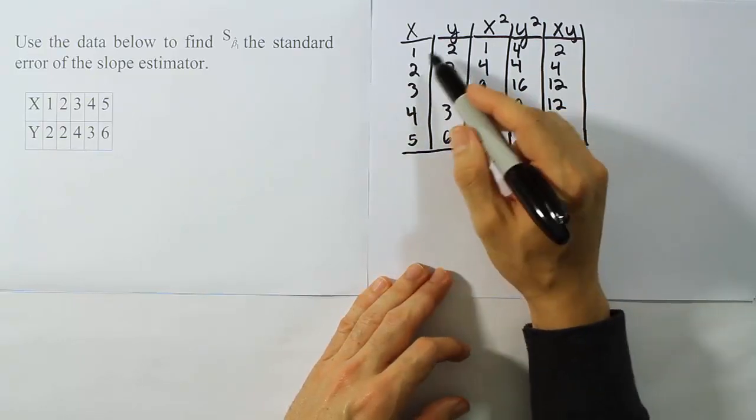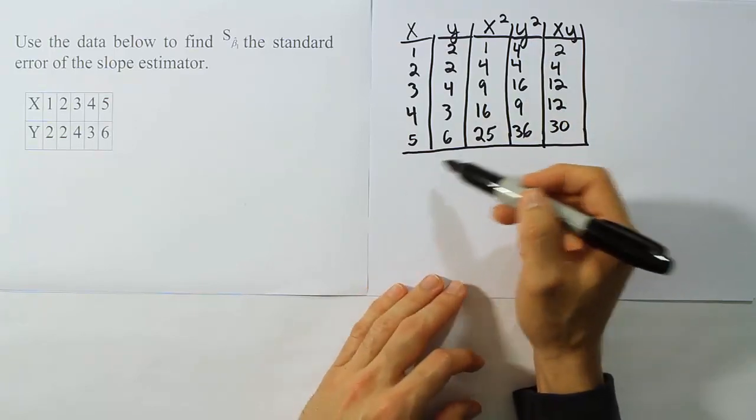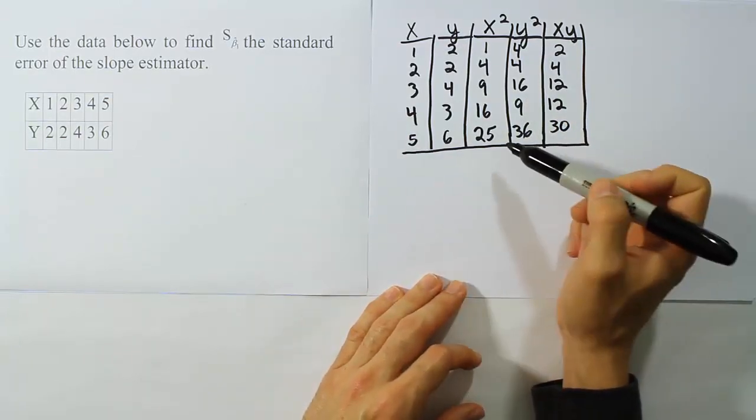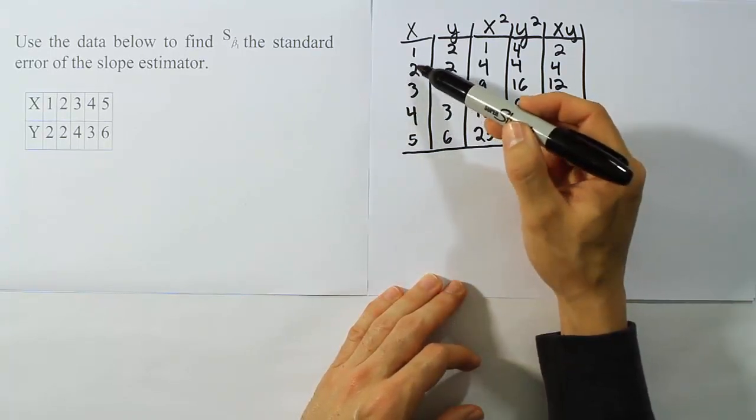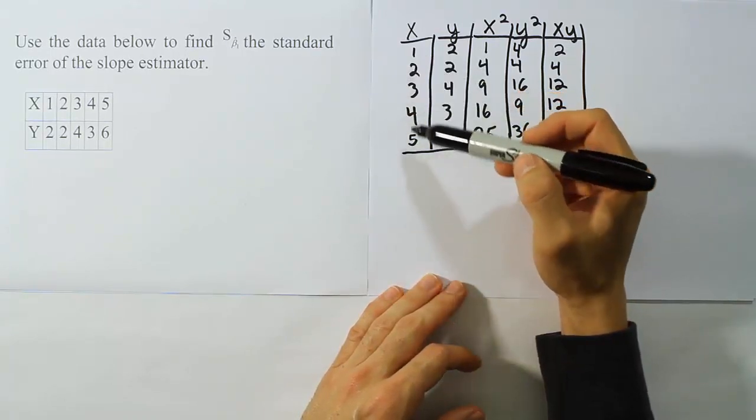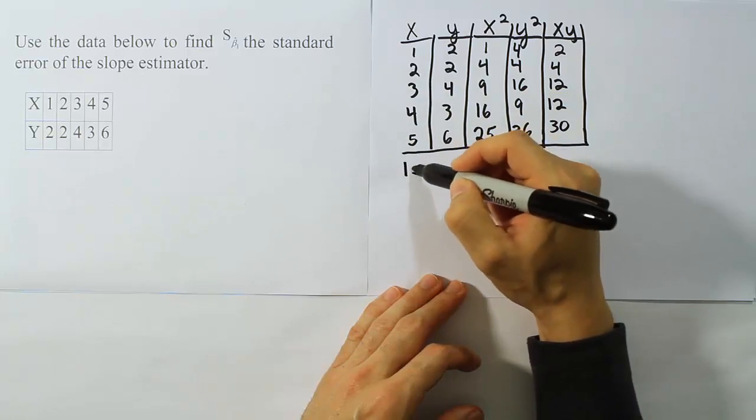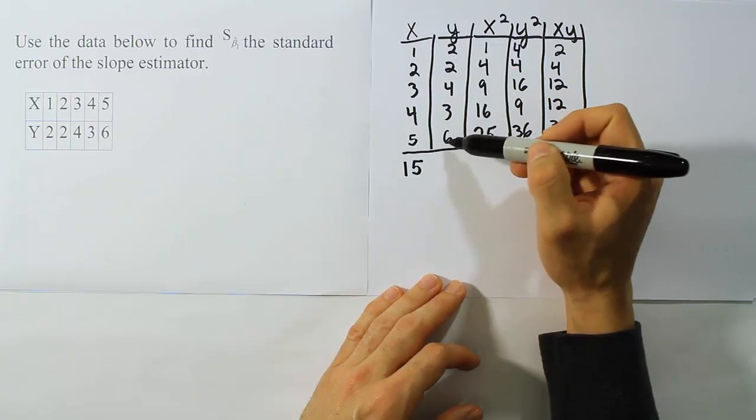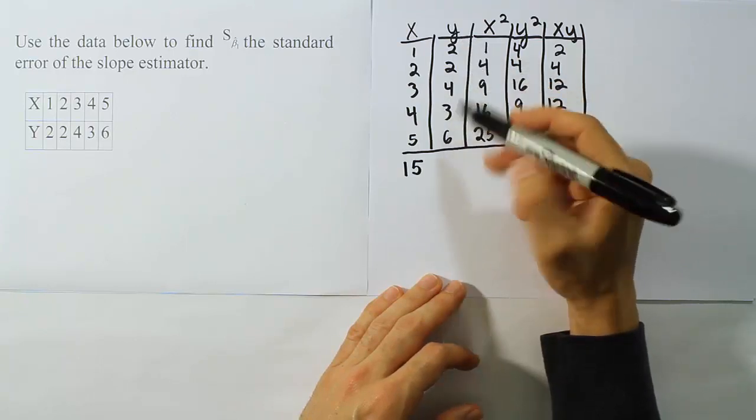That didn't take too long, luckily, because we have some simple integers to work with. Now the next step is to do the arithmetic to add up all these columns. So we have to add up all the data. So let's do that together. So it looks like we have 15 here. We have 5, and 5 is 10, and 5 more is 15. And then for this one we have 6 and 4 makes 10, and then 15, 16, 17.